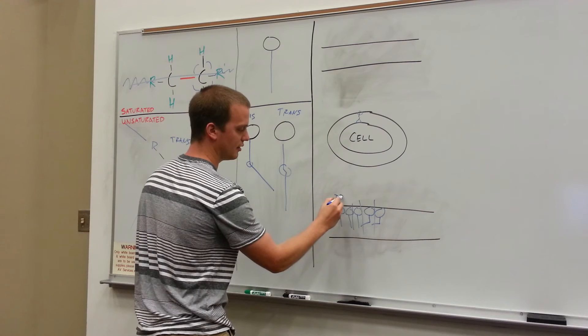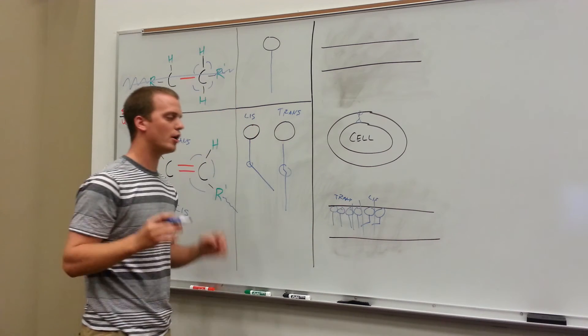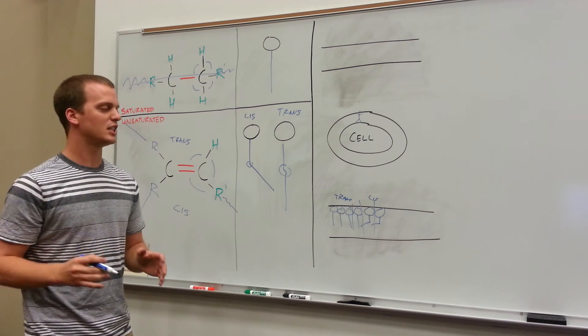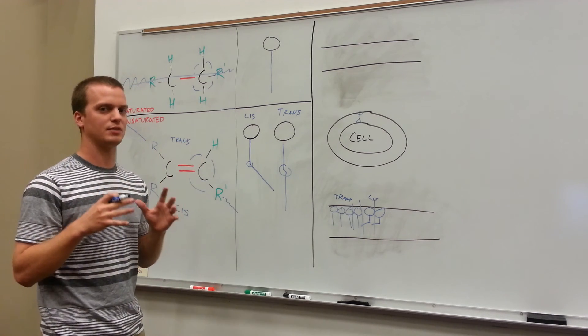So here are your trans, less mobile, and here are your cis, more mobile. We want our phospholipid bilayers to be mobile, to be highly fluid, and to not allow a lot of grouping inside those phospholipid bilayers.